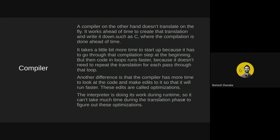A compiler, on the other hand, doesn't translate on the fly — it works ahead of time to create that translation, like C where compilation is done ahead of time. It takes a little more time to start up because it has to go through the compilation step, but code in loops runs faster because it doesn't need to repeat the translation each pass. The compiler also has more time to look at the code and make optimizations, whereas an interpreter doing its work at runtime can't take much time for optimization.